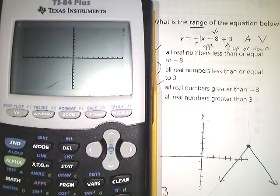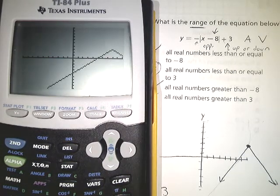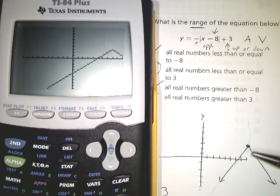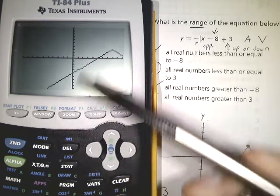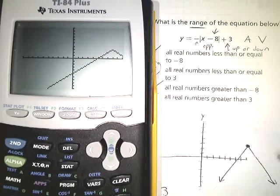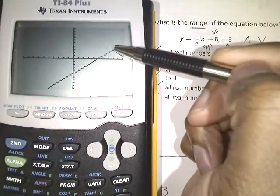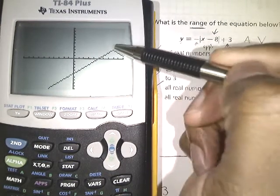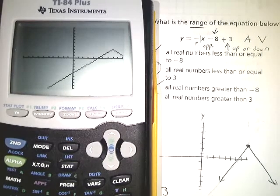Once you have that plugged in, you can press graph and you're going to see that we're going to get a graph that looks awfully similar to the graph that we just graphed by hand as well. And again, you'll be able to see the same type of information that we just figured out when we graphed by hand, that this graph is not going to go anything higher than positive 3. I hope this helps, good luck.